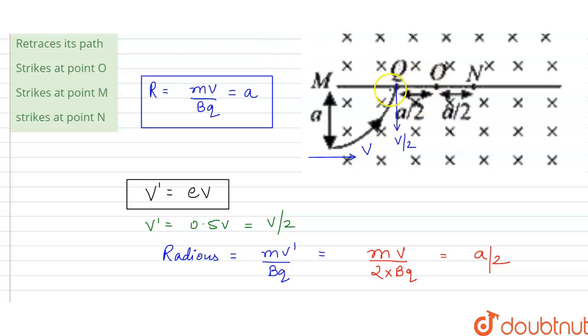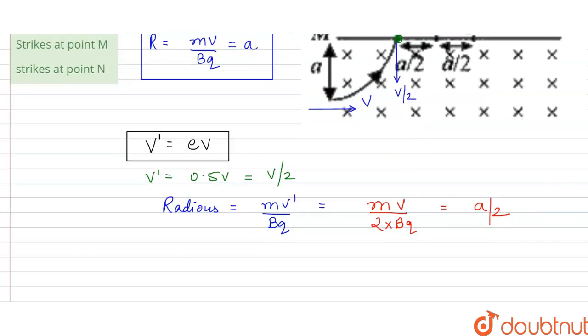So now our question is whether this particle collides at M or collides at N. For this we have to apply the right hand thumb rule. Direction can be decided by right hand thumb rule.